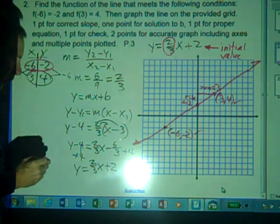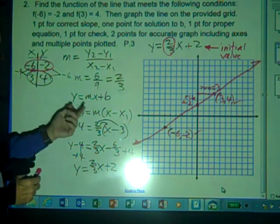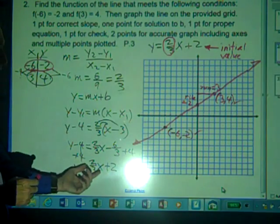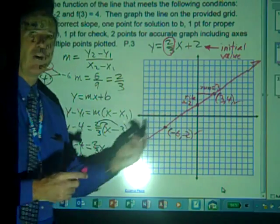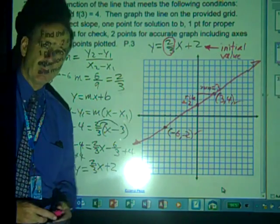So we've done all the things we need to do. First we found the slope. Secondly, we found the equation of the line. We graphed the line and checked our original 2 points on this line. I hope this has been helpful. Thanks for viewing.